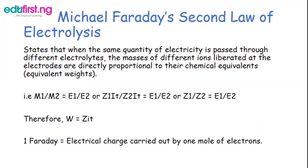Michael Faraday's Second Law of Electrolysis states that when the same quantity of electricity is passed through different electrolytes, the masses of different ions liberated at the electrodes are directly proportional to their chemical equivalence or equivalent weights.